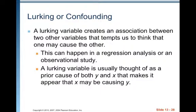Lurking or confounding: a lurking variable creates an association between two other variables that tempts us to think that one may cause the other. This can happen in a regression analysis or an observational study. A lurking variable is usually thought of as a prior cause of both Y and X, making it appear that X may be causing Y. For example, when ice cream sales go up, so do deaths by drowning — but high summer temperatures cause both increased ice cream consumption and more people going swimming, so temperature is the true cause of both.